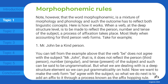When a verb at the deep structure level is to be made to reflect the person, number, and tense of the subject, a process of affixation takes place — most likely when accounting for third person verb forms. Take for example: Mr. John be a kind person.